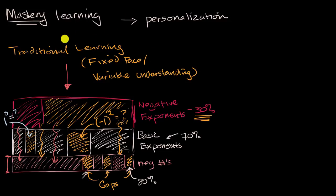While mastery learning has personalization. So it's more of a variable pace.